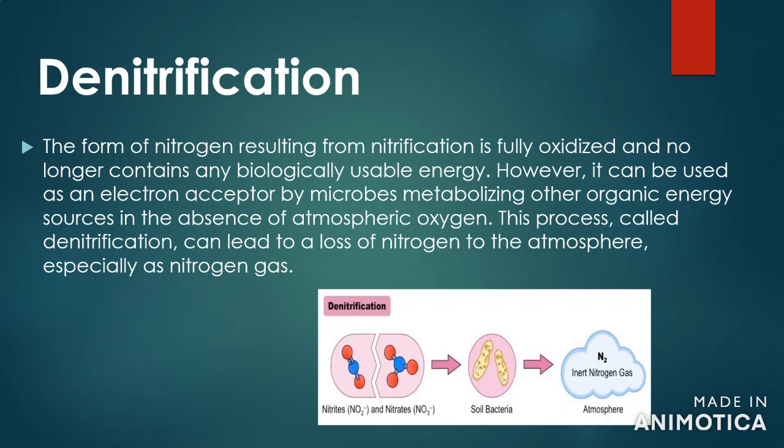In the second stage, organisms such as Nitrobacter oxidize nitrites to nitrates. Denitrification: the form of nitrogen resulting from nitrification is fully oxidized and no longer contains any biologically usable energy. However, it can be used as an electron acceptor by microbes metabolizing other organic energy sources in the absence of atmospheric oxygen. This process, called denitrification, can lead to a loss of nitrogen to the atmosphere, especially as nitrogen gas.